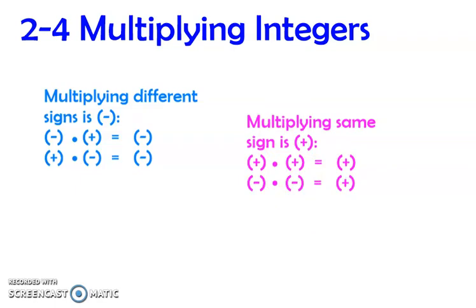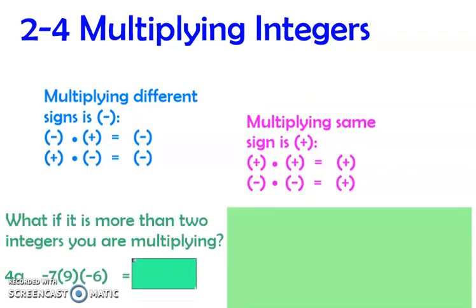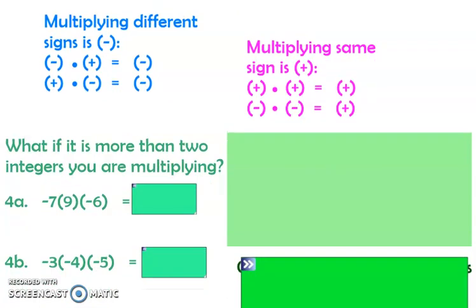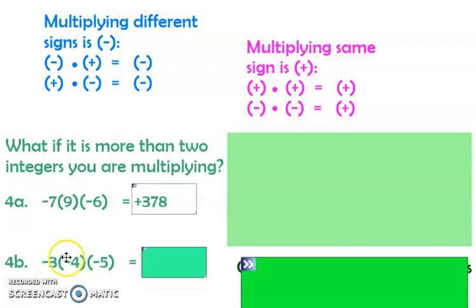That rule only works with two numbers. What if you're multiplying more than two integers? We count the number of negatives. For example, 7 times 9 times negative 7 — you get negative 63, then times another negative, so negative times negative gives a positive 378. Now if you multiply a positive times a negative, you get a negative — so 12 times 5 gives negative 60.